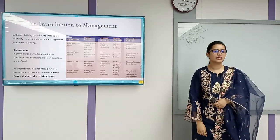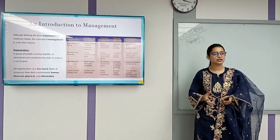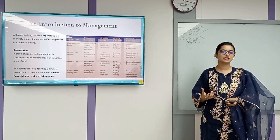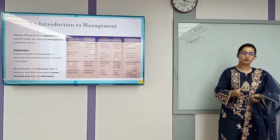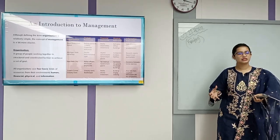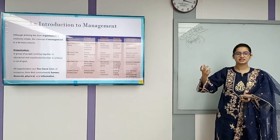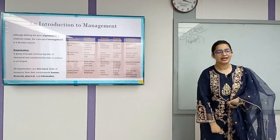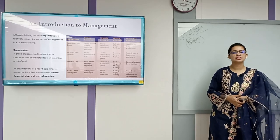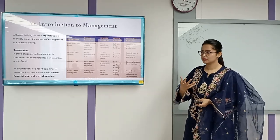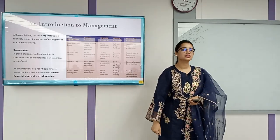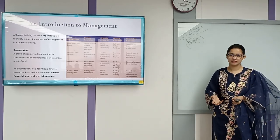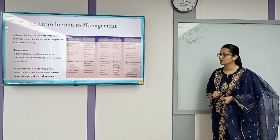An organization is a place where a group of people work together in a coordinated manner to achieve a certain goal — the organization's goal. To achieve any type of goal in an organization, we basically need four types of resources: human resource, physical resource, information, and finance.